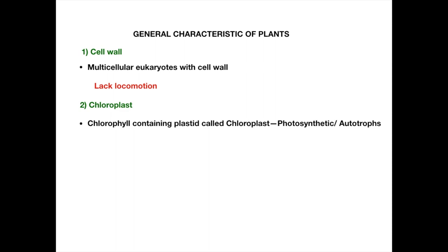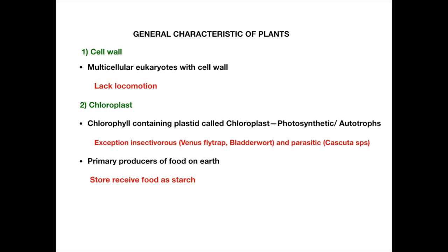There are exceptions to autotrophic nutrition in plants. Some plants like Venus flytrap and bladderwort are insectivorous, and some plants like Cuscuta are parasitic on other plants. Due to the ability of plants to manufacture their own food, they are the primary producers on Earth. Plants usually store food as starch within the cells, while animals and fungi store food in the form of glycogen and fat.